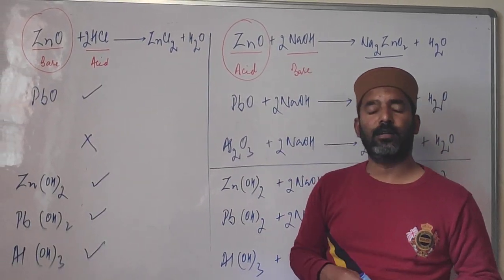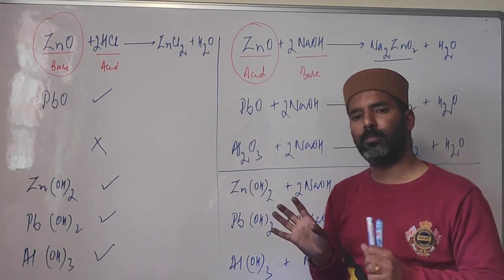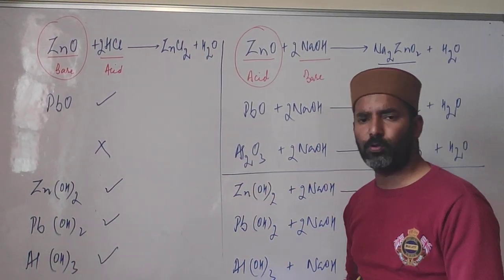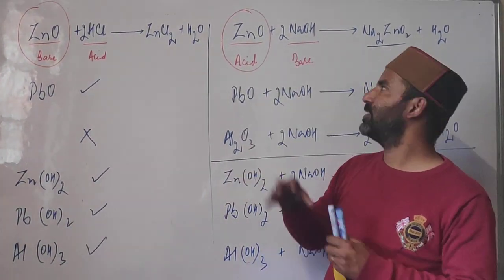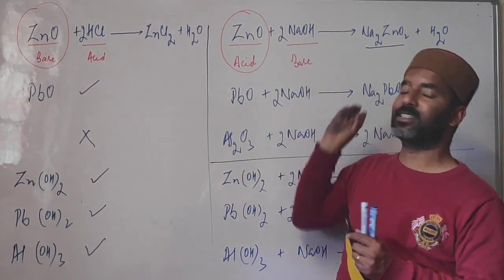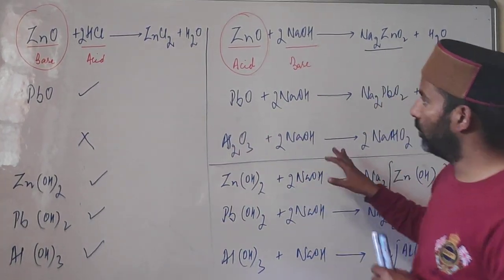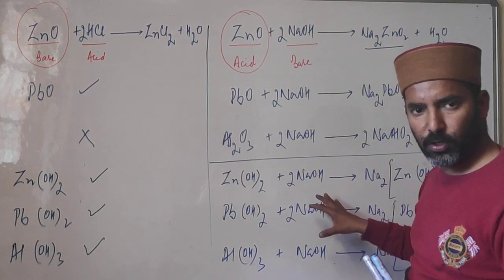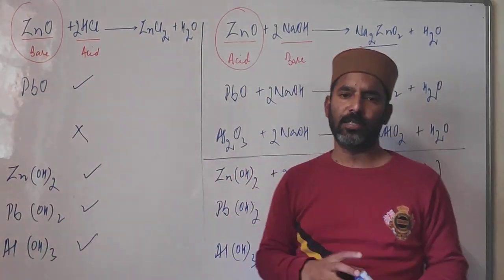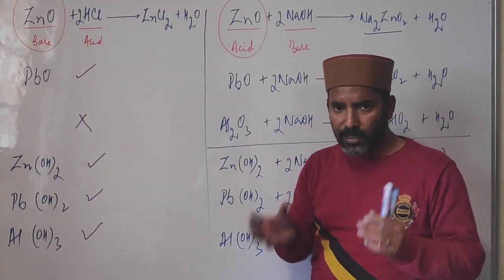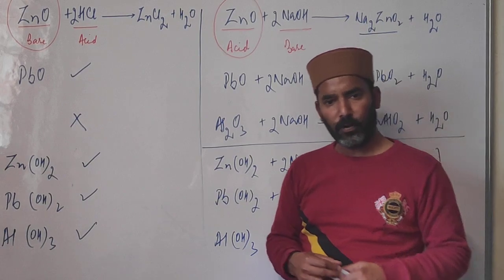This unit is very important for ICSE Class 10, carrying 4 marks, and it is easy to identify the metal ions in a salt by the action of NaOH, KOH, or ammonium hydroxide. Note that we discussed reactions with NaOH only, but KOH reacts similarly. In the next video lecture, we will discuss questions based on these topics and how to identify metal ions by the action of these reagents. Thank you.